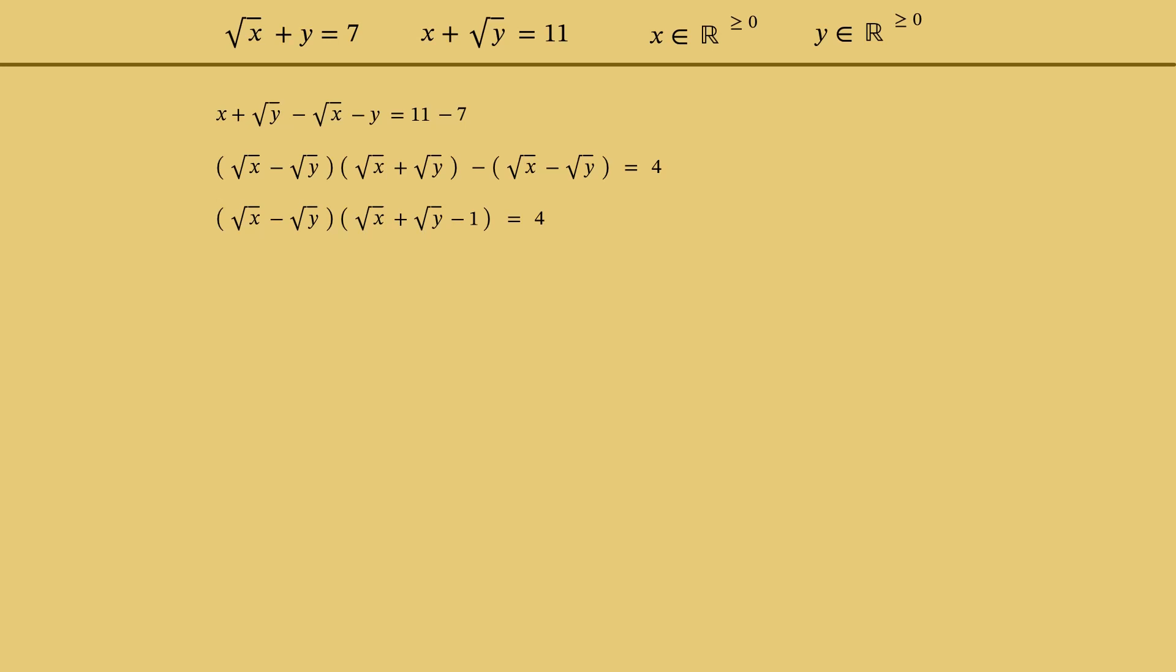But what should we do next? The other videos insist on representing 4 as a product of two integers. However, this makes sense only if we are certain that the factors in the left-hand side are integers, while I don't see any evidence for that. And according to the comments, I am not the only one having such confusion. So, let's wipe that out and look for a different approach.